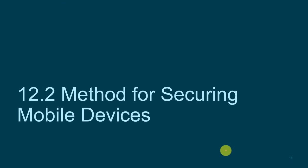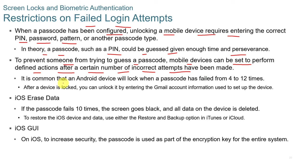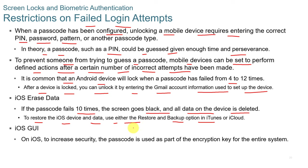To secure mobile devices, you can put restrictions on failed login attempts. Unlocking a mobile device requires entering the correct PIN, password, pattern, or face recognition. Mobile devices can be set to perform defined actions after a certain number of incorrect attempts. An Android device will typically lock after 4 to 12 failed attempts, and can then be unlocked by entering the Gmail account information. On iOS, if the passcode fails 10 times, the screen goes blank and all data on the device is deleted. Data can be restored using the restore and backup option in iTunes or iCloud.